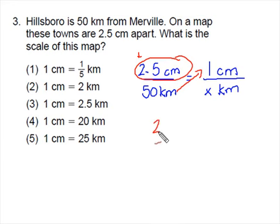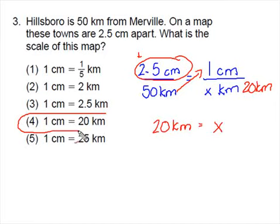I'm getting an answer of 20 kilometers equals x. So my proportion is 20 kilometers. Every centimeter on my map represents 20 kilometers. So option four shows that one centimeter equals 20 kilometers.